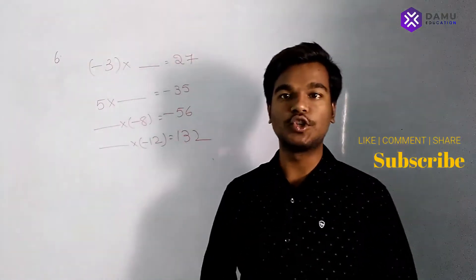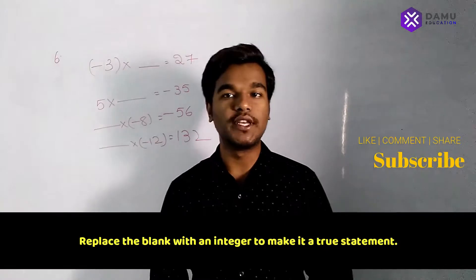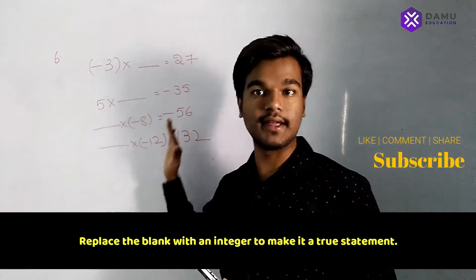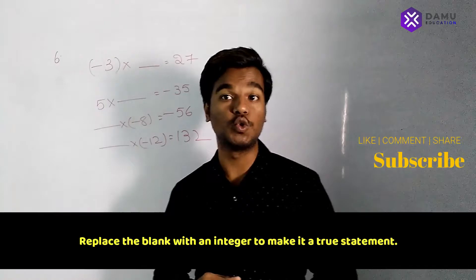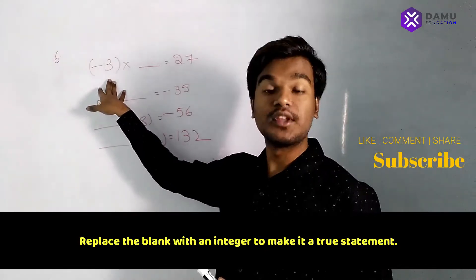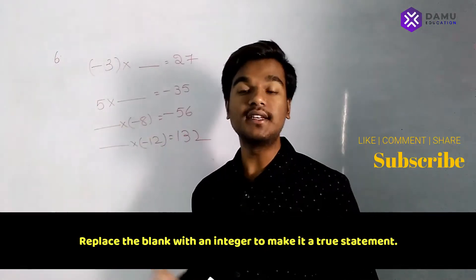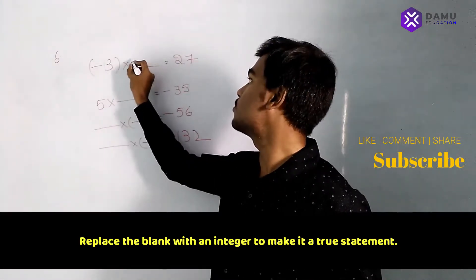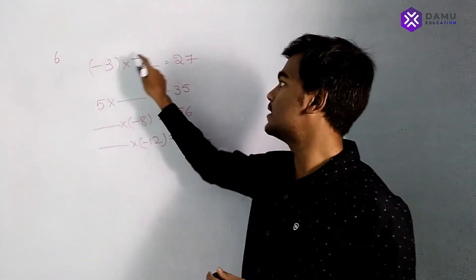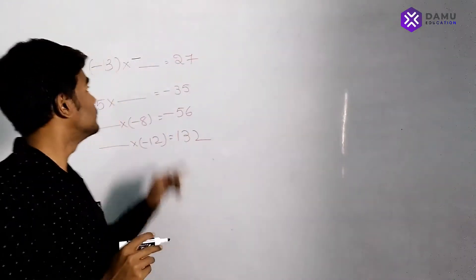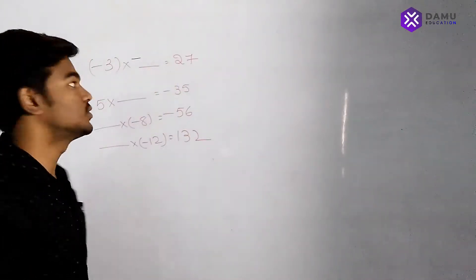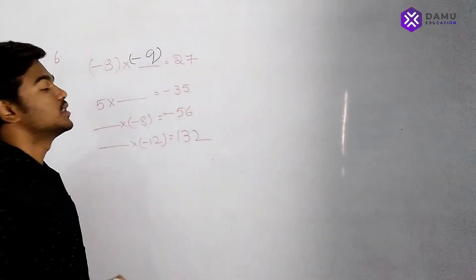Now we discuss the last question in exercise 4 on integers — we have to fill in the blanks to show equal values and make the statements true. For the first blank: minus 3 into what gives plus 27? As I already mentioned, minus into minus always becomes plus. So minus 3 into minus 9: 3 into 9 is 27.